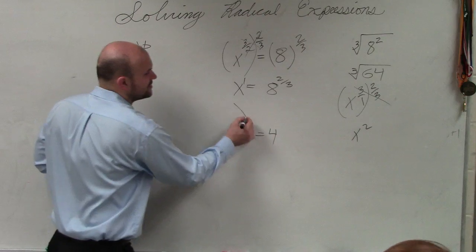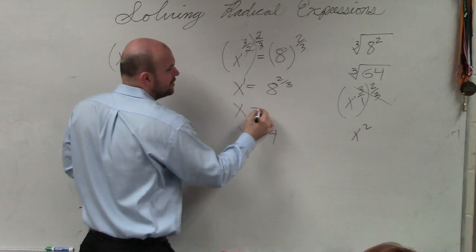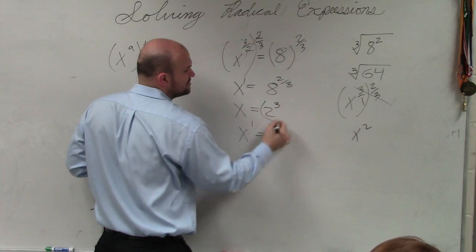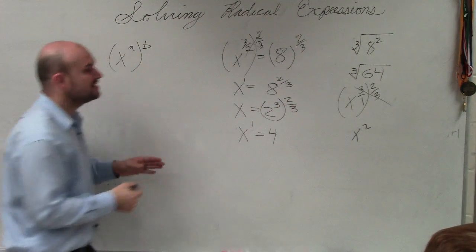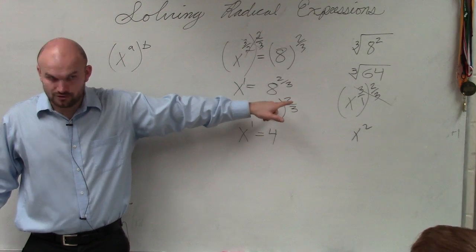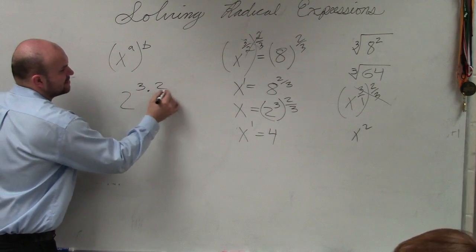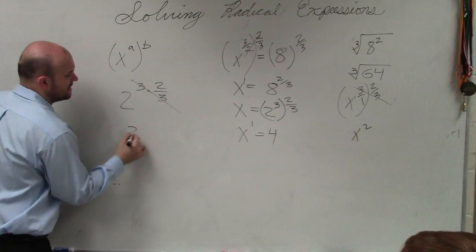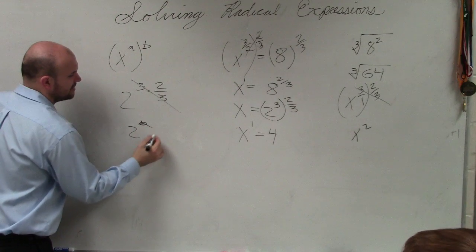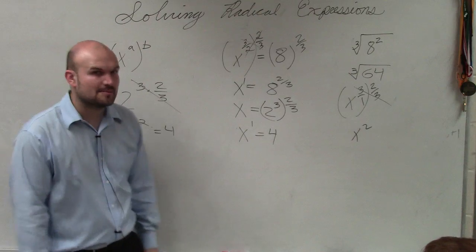So what I'm showing you is just another way to do this. Instead of doing numbers like this and using your calculator, you could also write this as 2 cubed times the 2 third power. Because, again, what happens when you multiply an exponent, raise it to a power? You multiply them, right? So that's 2 to the third times 2 thirds. Those cancel out. You're left with 2 squared, which equals 4. And you get the exact same answer.